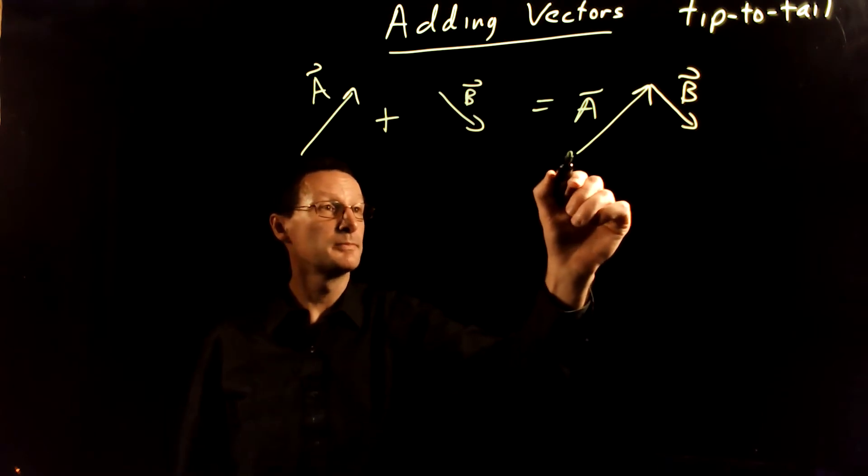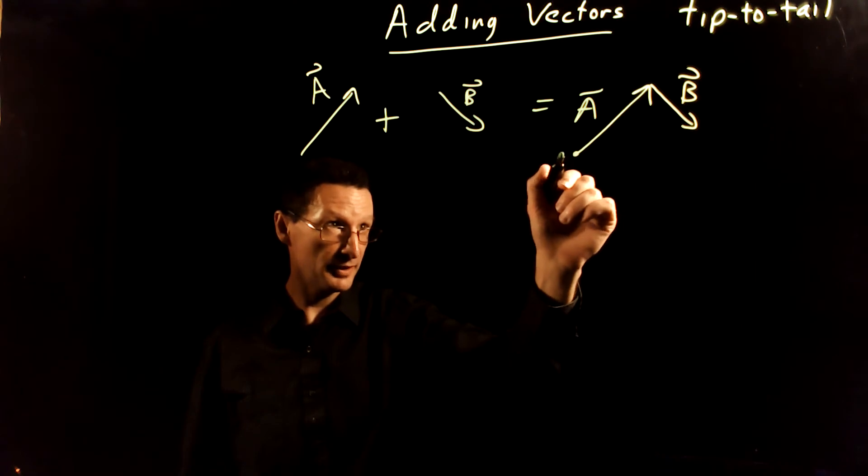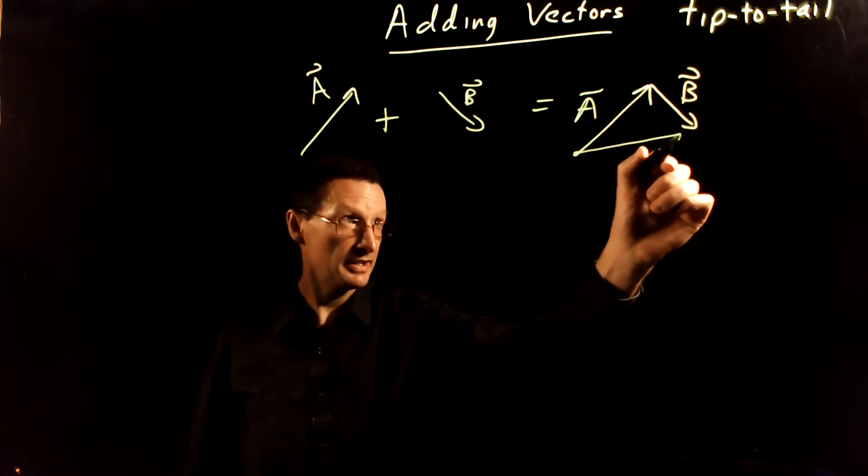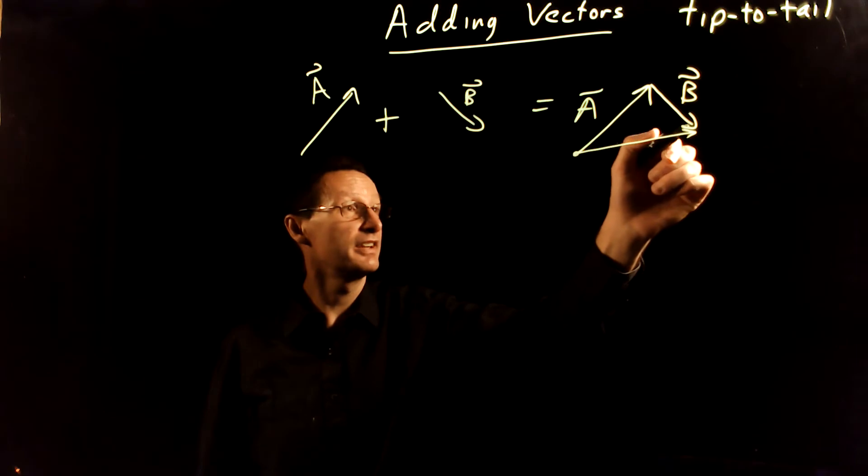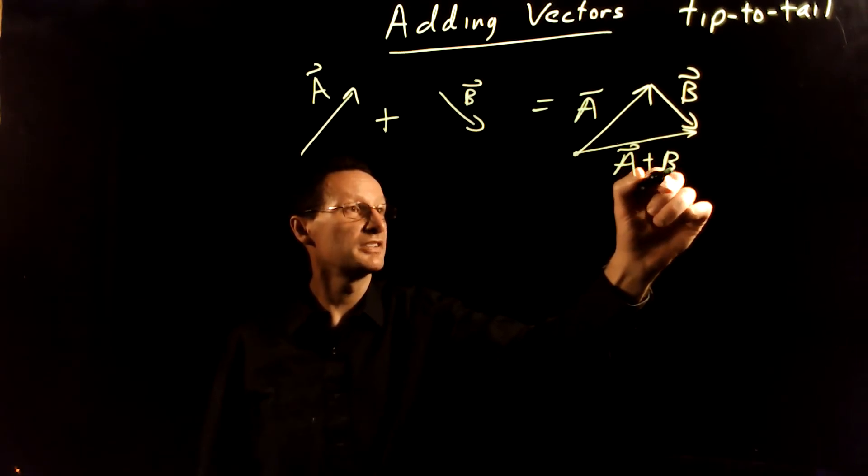which is A plus B, begins at where you started, at the very beginning of A, and then ends where you finish, at the end of B. So this resultant is A plus B.